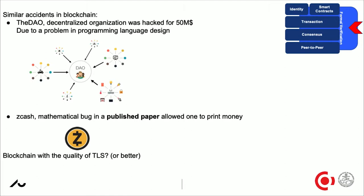If the majority of people thought an idea was good, you would actually get paid out. The problem was that the way this organization was programmed, they thought they understood what they were doing. But the semantics of the underlying programming language were so subtle that the rules were slightly different, and in this way they got hacked for a third of their money — $50 million.